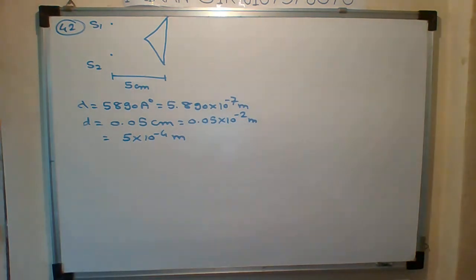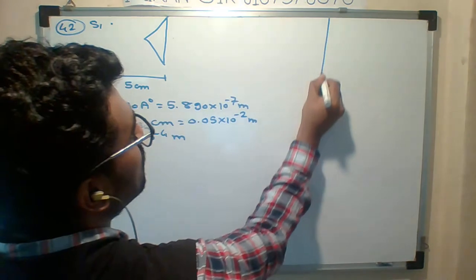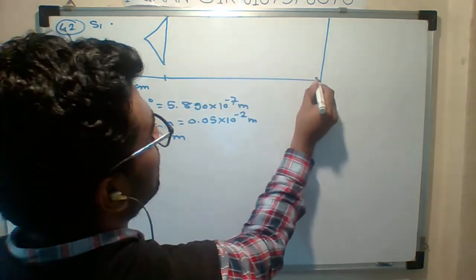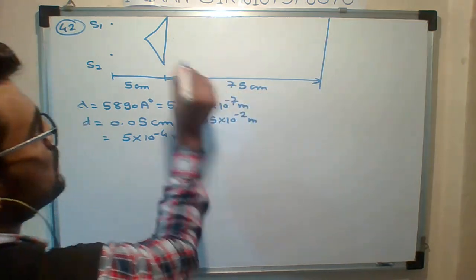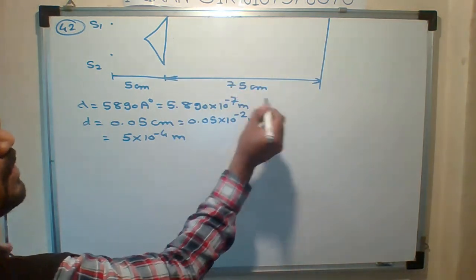After that, the 75 is very important. He said, the width of the fringes observed in the eyepiece, and the distance is 75 cm from the biprism. That is very important. So what is total D?